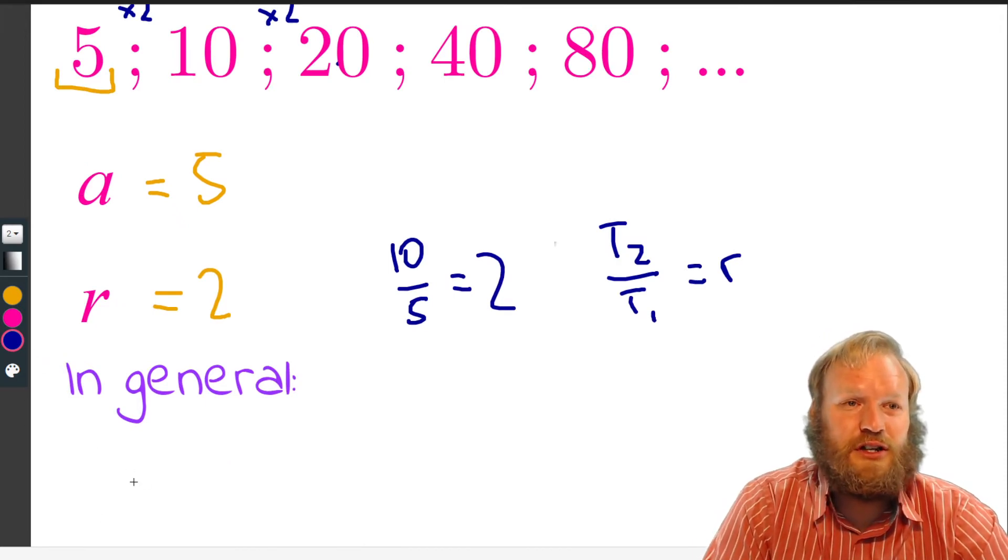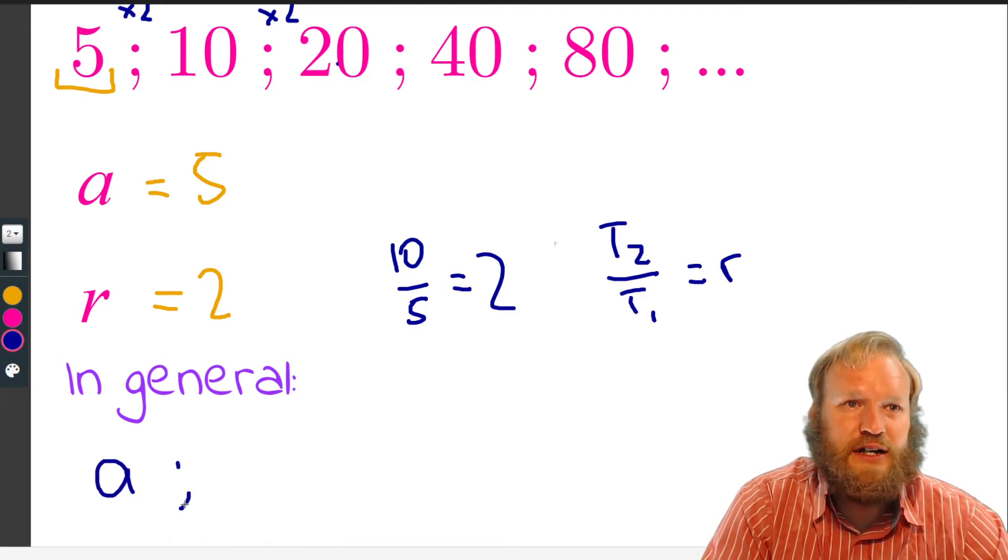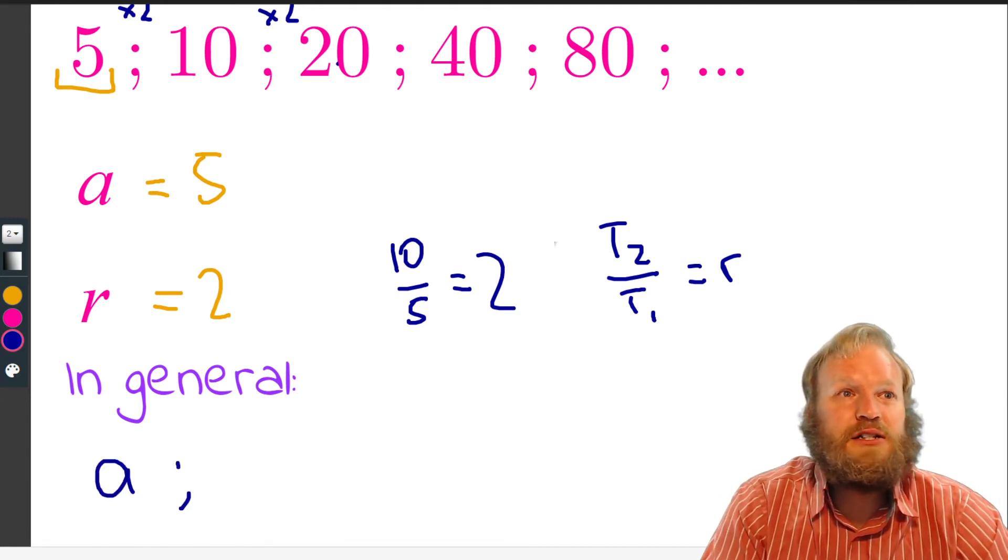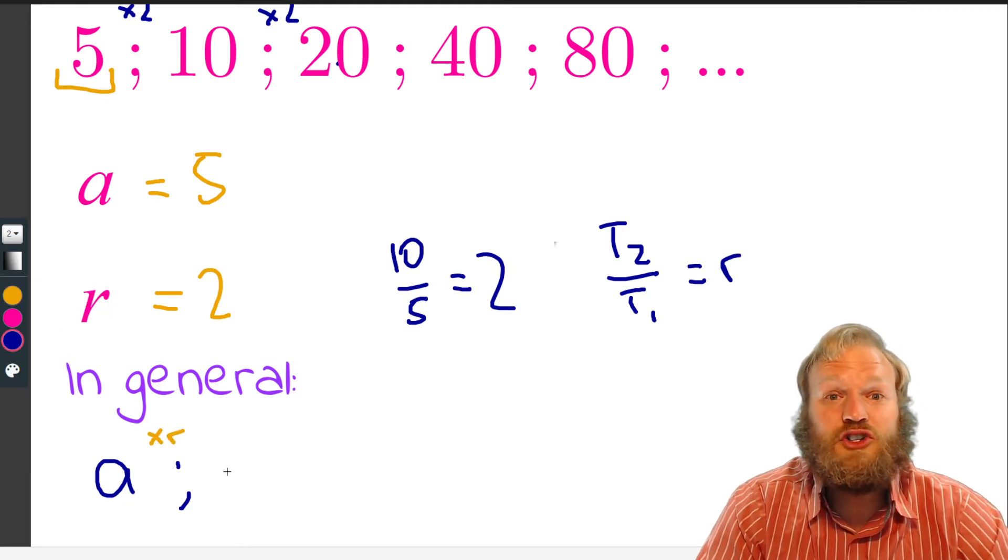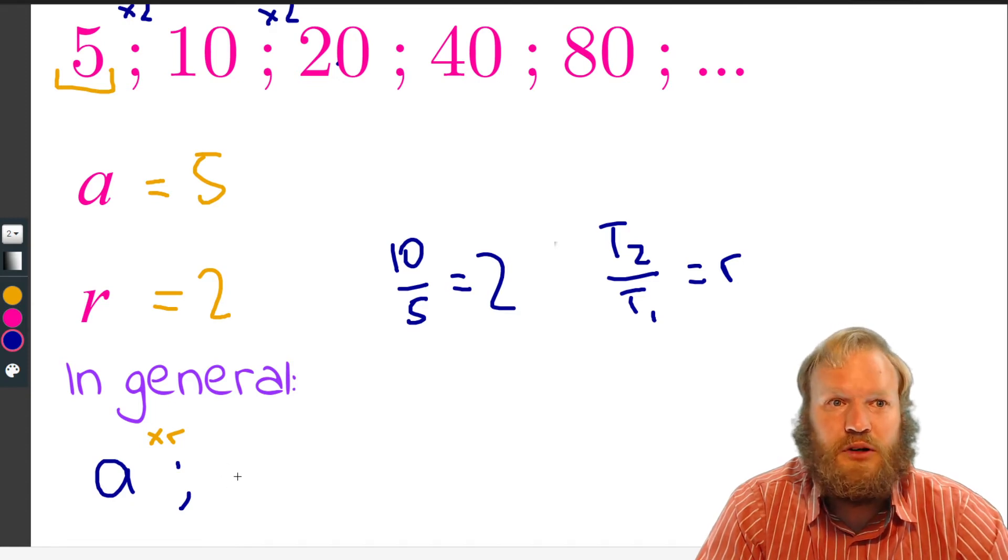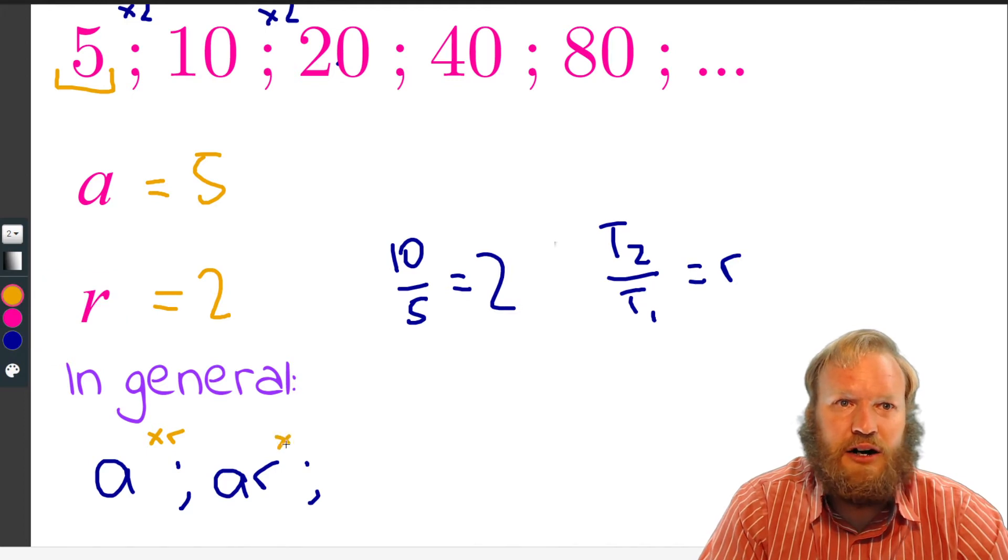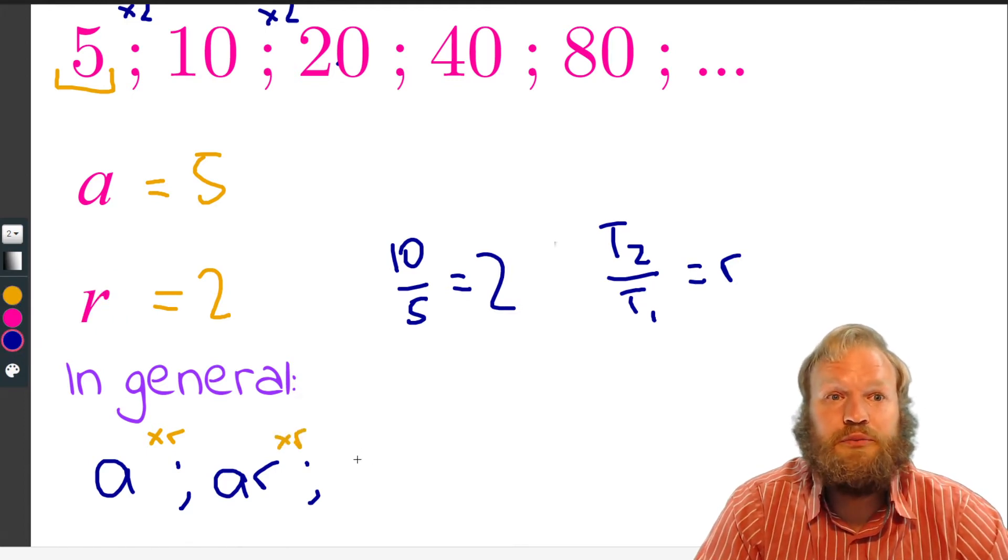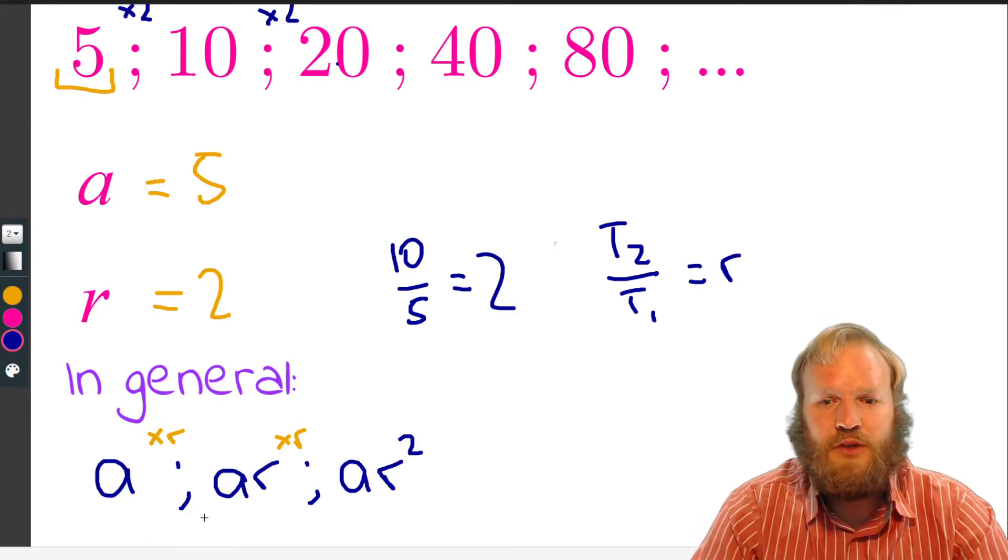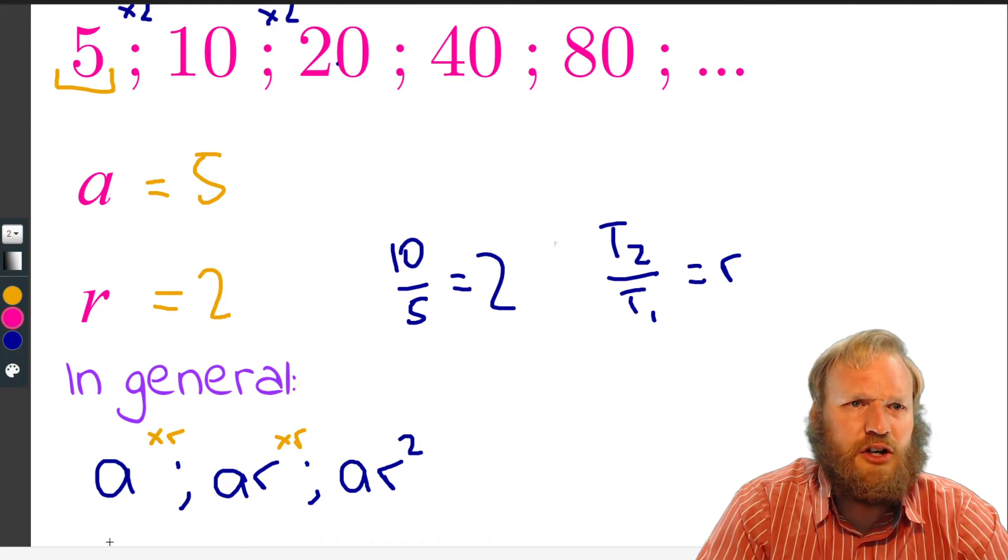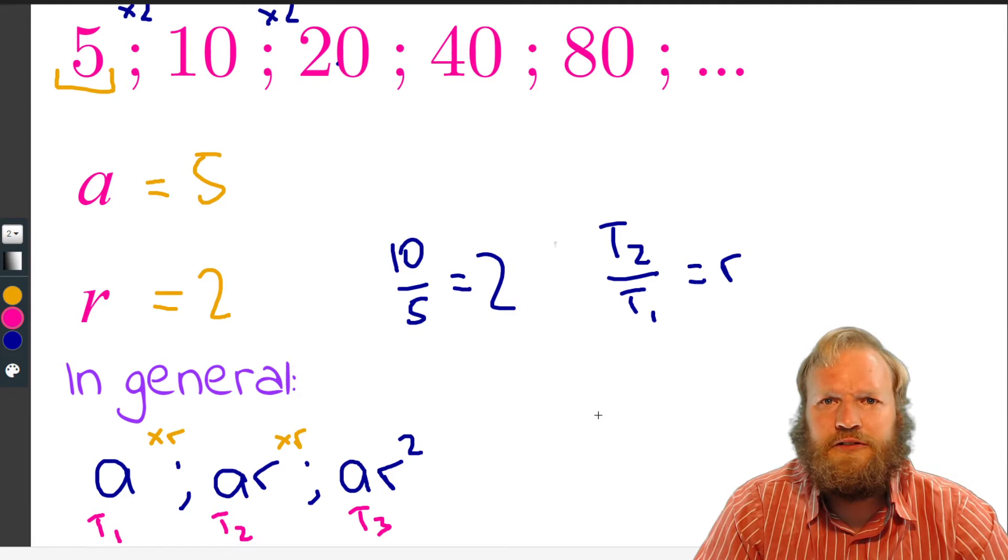So let's see what happens in general. In general, if we looked at it algebraically, if we had our first term as A and we're multiplying by our common ratio R, what would our second term be in general? Well, it's AR. And then if we multiplied that by R again, what would our third term be? Well, it's A times R times R. So A times R squared.